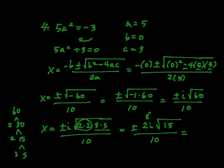So we have a 2 and we have a 10 here. Those are both divisible by 2, so it's 1 here and 5 here. So plus or minus i times the square root of 15 over 5.